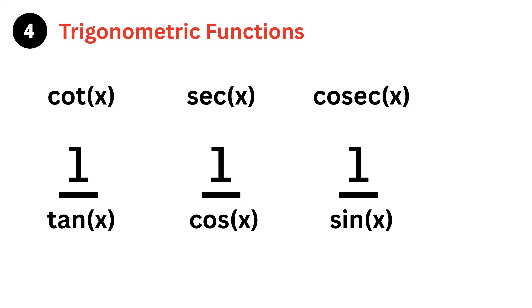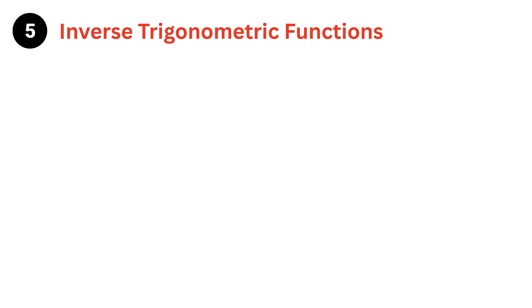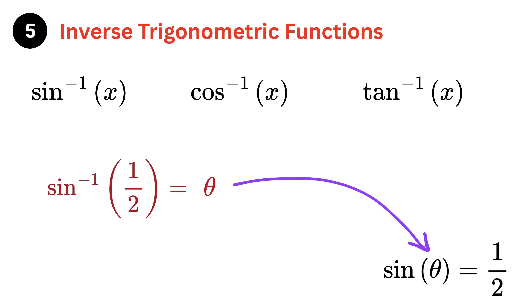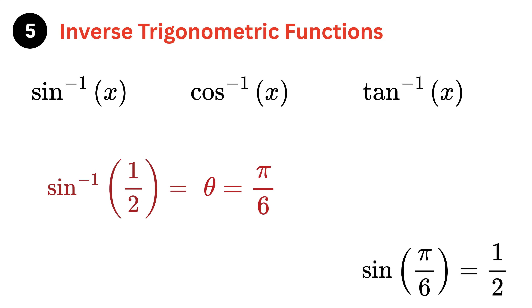Next are inverse trig functions — things like inverse sine, inverse cosine, and inverse tangent. They take in a value and give you an angle. For example, sine inverse of one-half gives you the angle whose sine value is one-half, which is 30 degrees or π/6.